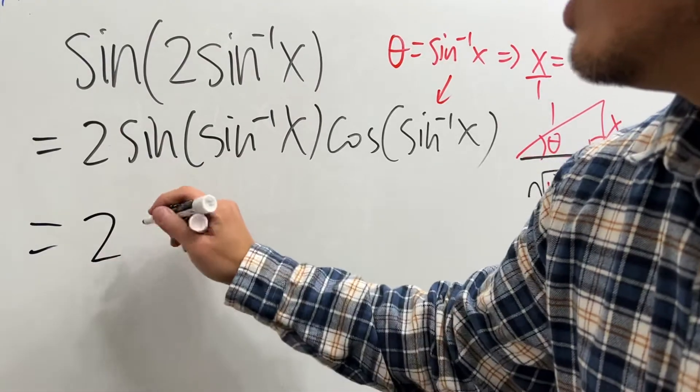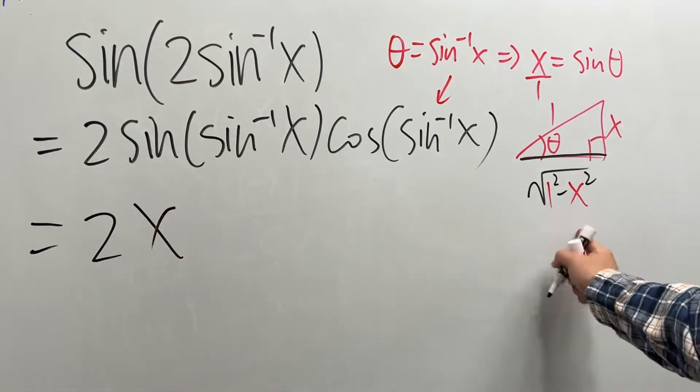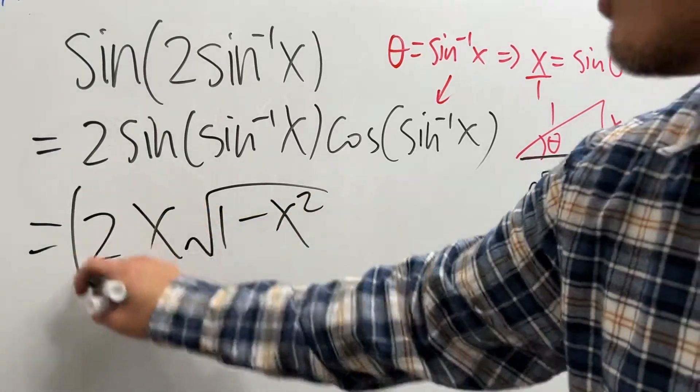This and that is just 2. Then we have the x. And this is just this over that, which is square root of 1 minus x squared. And we're done.